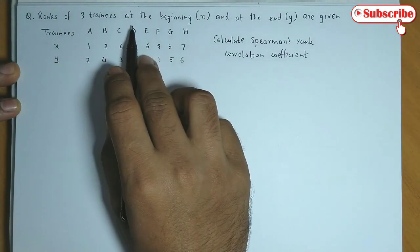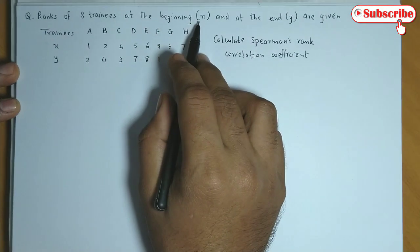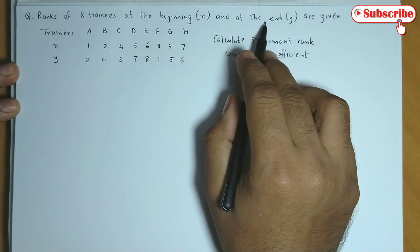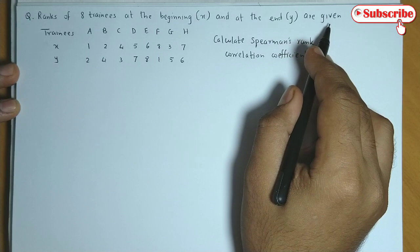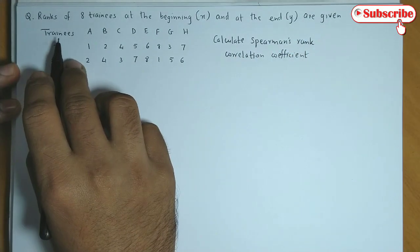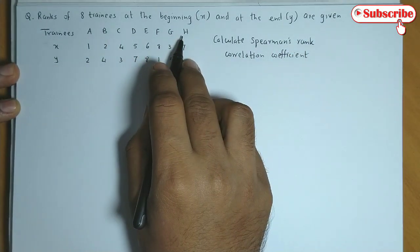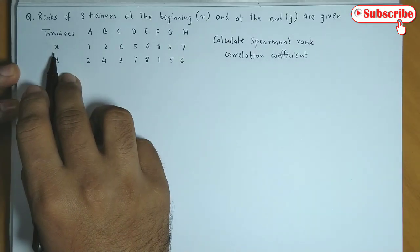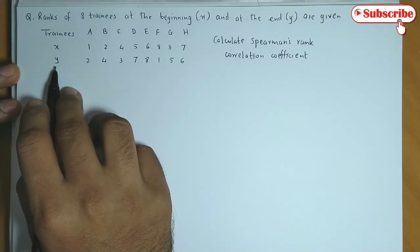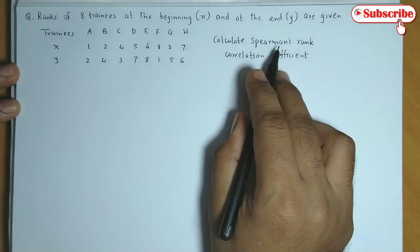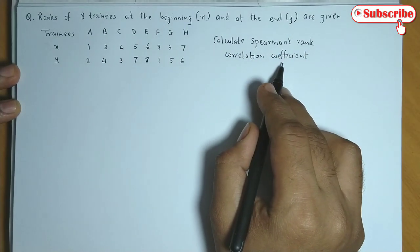The ranks of 8 trainees at the beginning and at the end are given below. So here is the ranking at the beginning of the training and at the end of the training. You have to calculate Spearman's rank correlation coefficient.